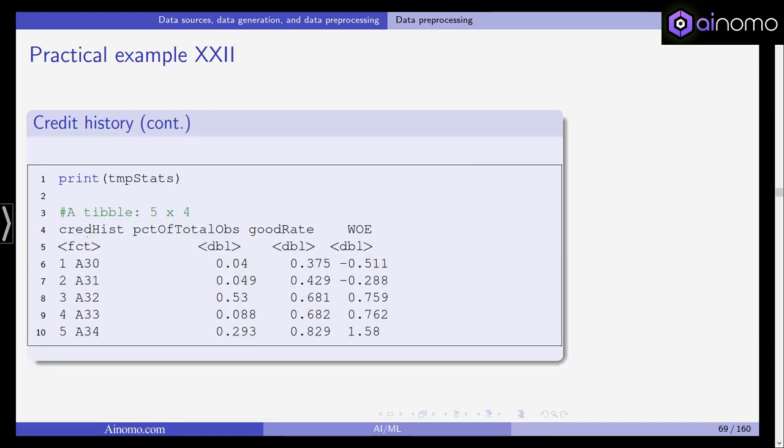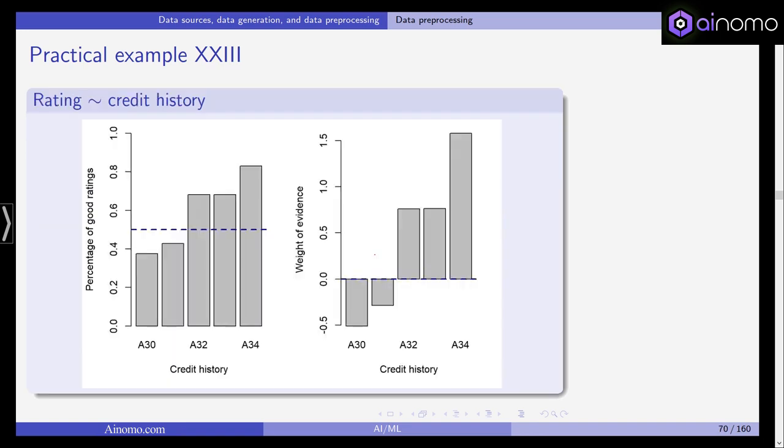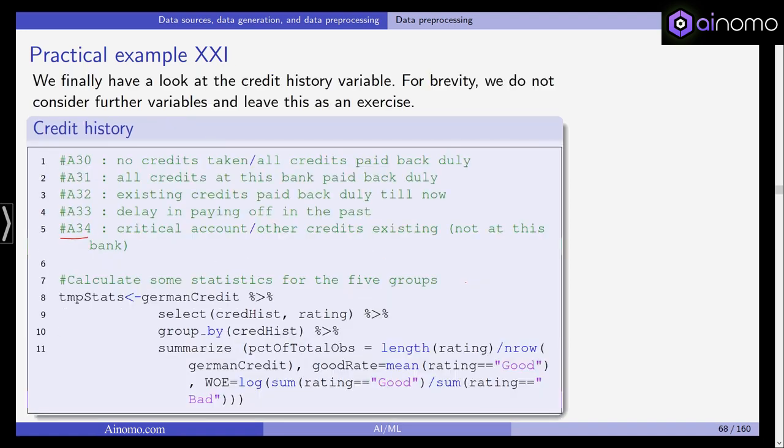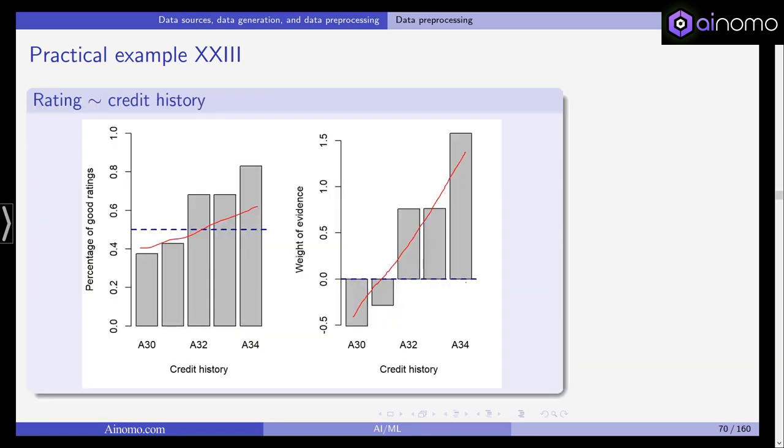This is what comes out of this analysis. You can see the percentages start with 4%, 4%, 50%, 8%, and 29%. For the weight of evidence, it's even more extreme as we've seen before. The percentage of good ratings shows a trend, but it's much more extreme when looking at the weight of evidence. Not surprisingly, the last status, which is a critical account, is highly predictive and has high explanatory power for explaining a bad credit rate. This is the weight of evidence ratio that can be used to study the explanatory power of our covariates.